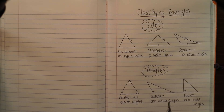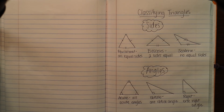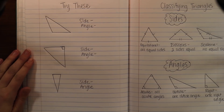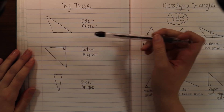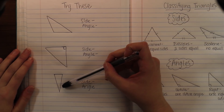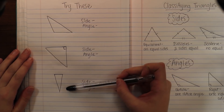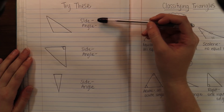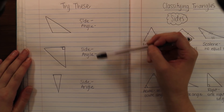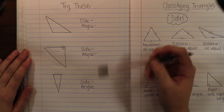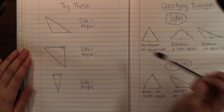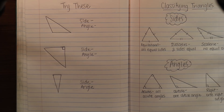That is all the triangles we're going to be looking at, so make sure you have all of these copied down into your notebook. On the opposite side of your notes, try these: you have three different triangles drawn — go ahead and draw those in your notebook. Classify each triangle based on its side and based on its angle, so every triangle should have two different descriptions. You can refer back to your notes on the other side to help you.